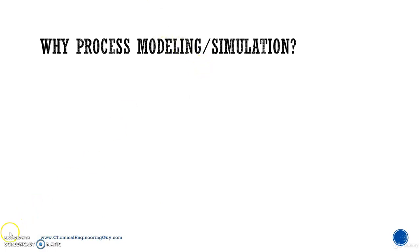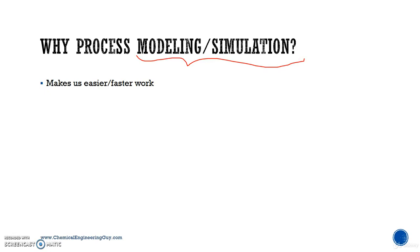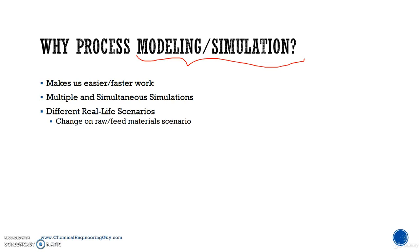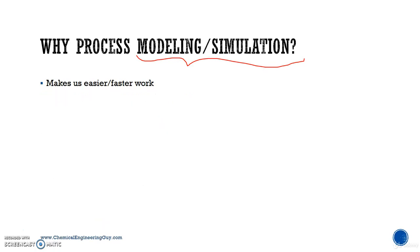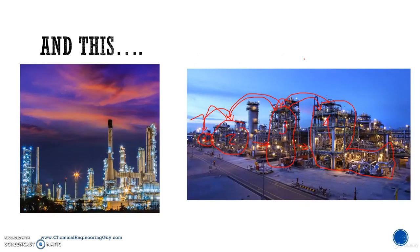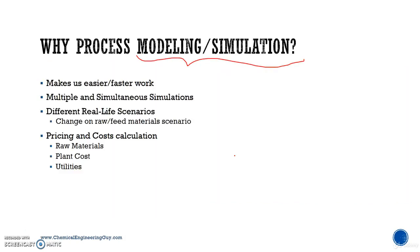Process modeling and simulation is very important in the chemical industry, especially to get actual data. It makes work not only easier but faster — we take less time to analyze data. We can run multiple simultaneous process simulations, take different real-life scenarios, handle changes in raw material, calculate pricing and cost depending on raw material, plant cost, utilities, and explore what-if scenarios such as changes in temperature or pressure.